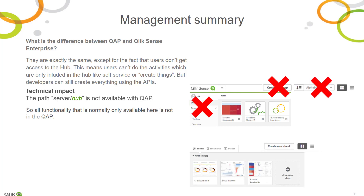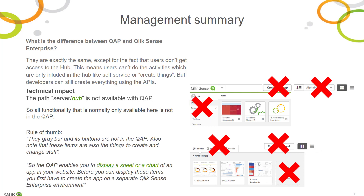The ability to create and edit an app, sheets, or objects is not available in QAP. This can only be done in the Qlik Sense Enterprise Edition, which includes the hub. Technically, it means that all end-user functionality normally only available in the URL path slash hub is not available in QAP.